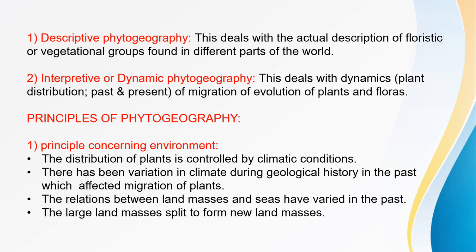The first principle concerns the environment. The distribution of plants is controlled by climatic conditions. There has been variation in climate during geological history in the past, which affected the migration of plants.